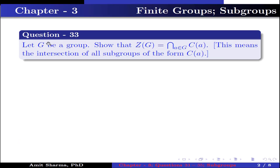Question number 33: Let G be a group. Show that Z(G), which is the center of G, is equal to the intersection over A belonging to G of C(A), which is the centralizer of A. This means the intersection of all subgroups of the form C(A).